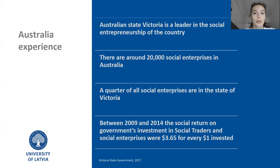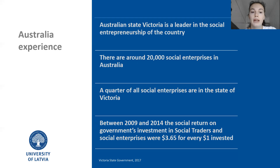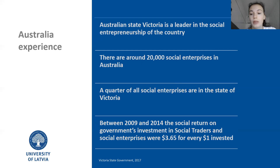Now we are switching to the experience of Australia, and to be more exact, Victoria, the state of Australia. The Australian state of Victoria is the leader in social entrepreneurship in the country. In general, in Australia there are around 20,000 social enterprises, and a quarter of them are located in the state of Victoria. Between 2009 and 2014, the social return on government investment in social traders and social enterprises was $3.65 for every $1 invested.